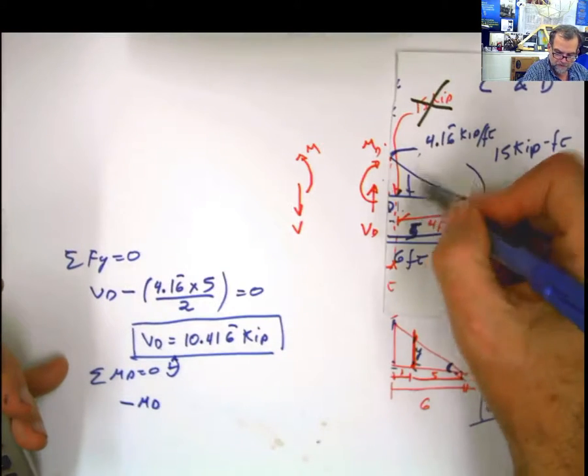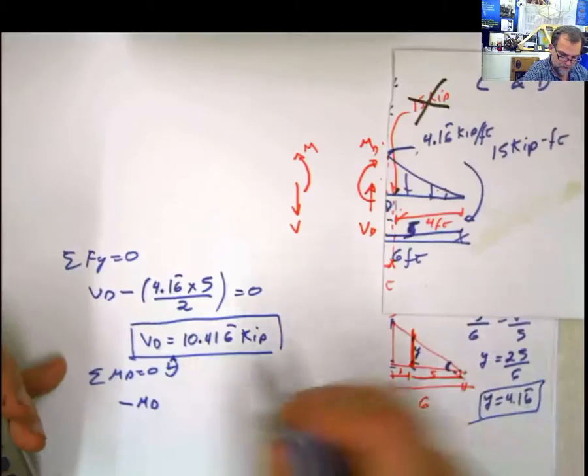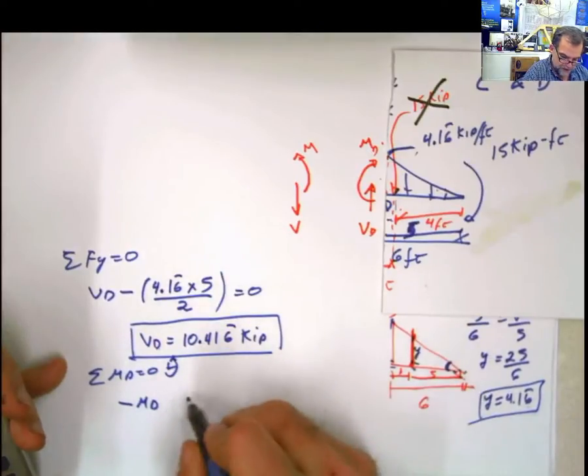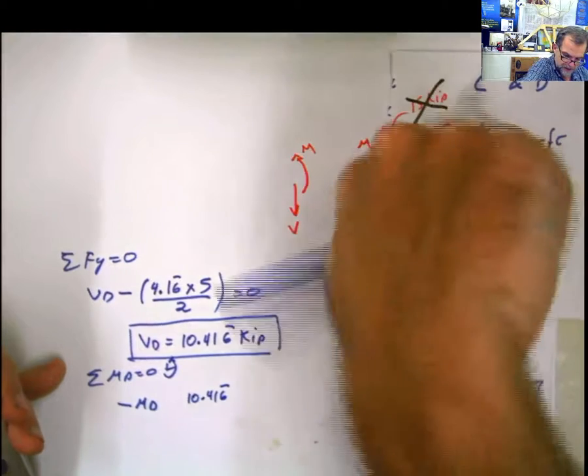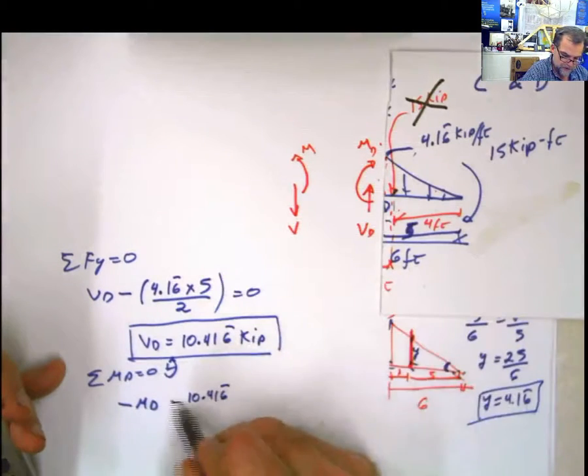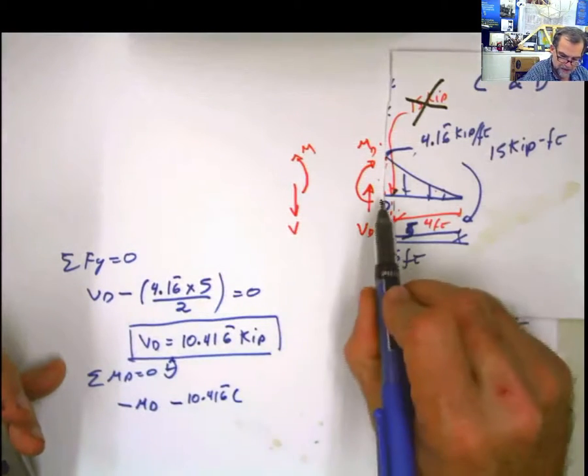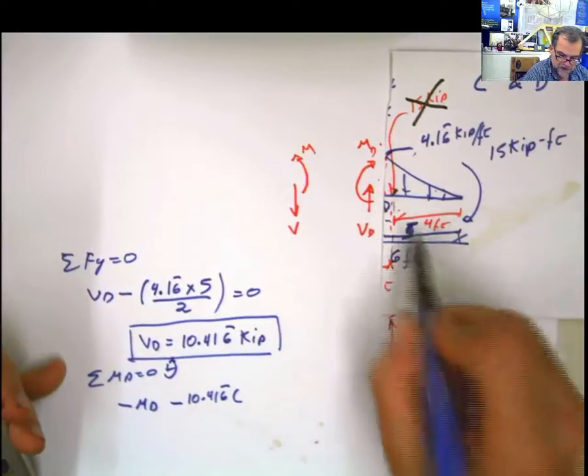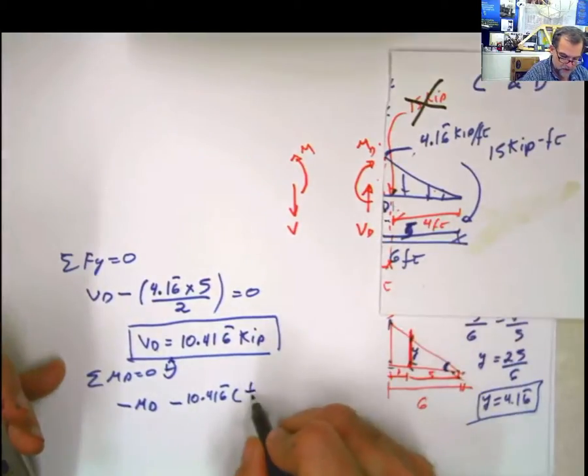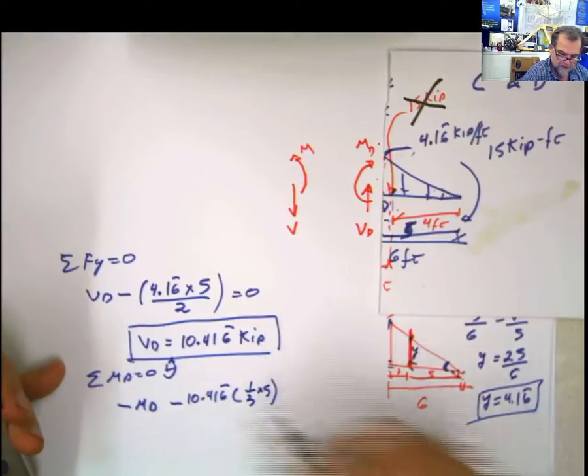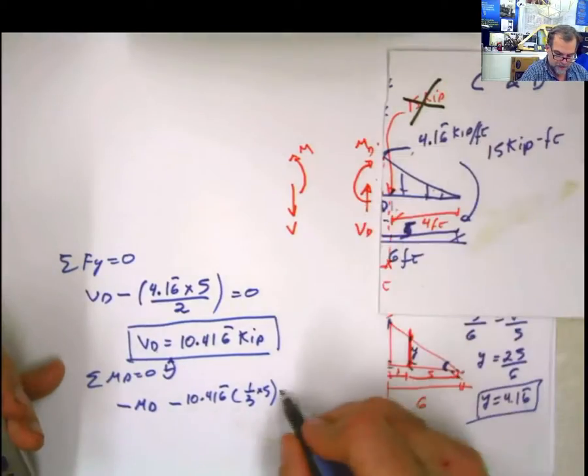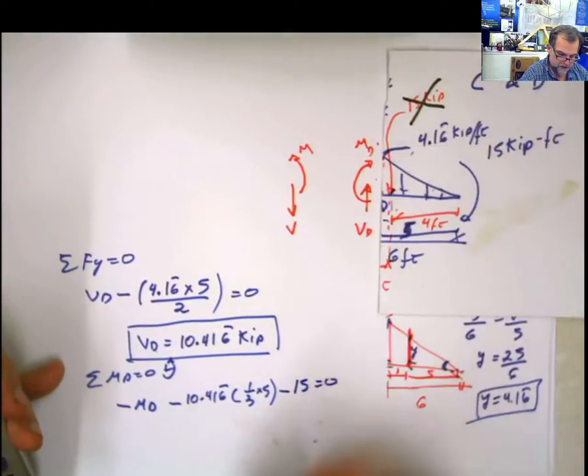Now, the force coming from here is this value, the area, 10.416 periodic. And it's acting in this direction, also negative. Multiply by the distance. The distance from here to here is 1 third of the base. And the base is 5. So 1 third of 5. And I have this other moment here. Minus 15 equals 0.